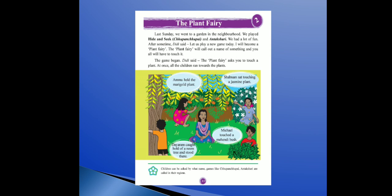The game begins. Game start ho gayi. Didi said the plant fairy asked you to touch a plant. Main plant fairy bani hoon, toh abhi main order de rahi hoon ki aap jaake plant ko touch karo. At once, all the children ran towards the plant. Picture mein Amu hai, Sabnam hai, Dayaram hai, Michael hai. Amu jaake marigold plant ko touch karti hai.